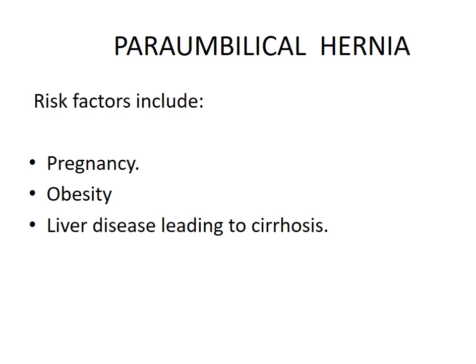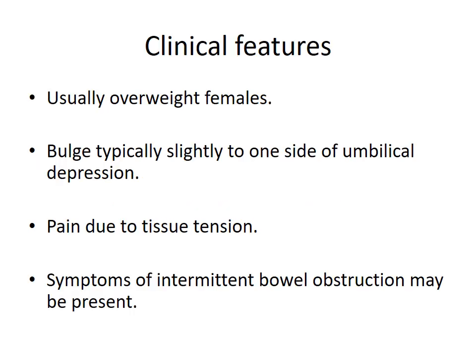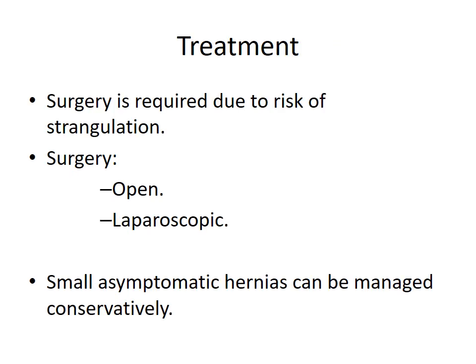Para-umbilical hernia: risk factors include pregnancy, obesity, and liver disease leading to cirrhosis. It usually affects overweight females. There is a bulge typically slightly to one side of the umbilical depression, pain due to tissue tension, and symptoms of intermittent bowel obstruction may be present. Surgery is required due to risk of strangulation; both open and laparoscopic approaches are used. Small asymptomatic hernias can be managed conservatively.